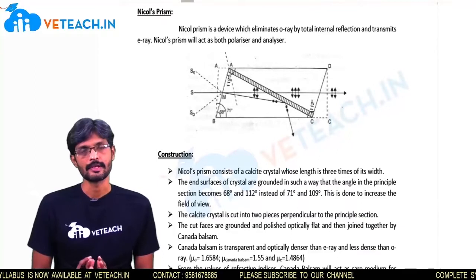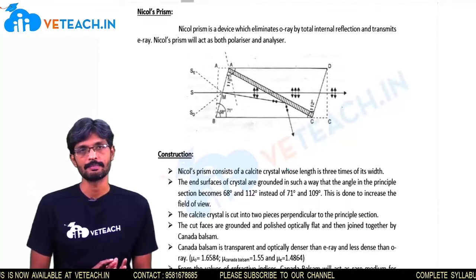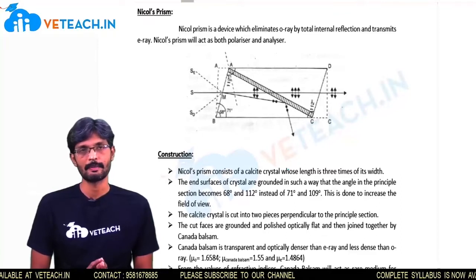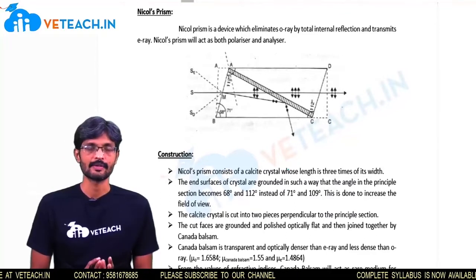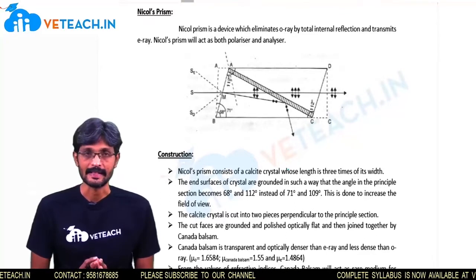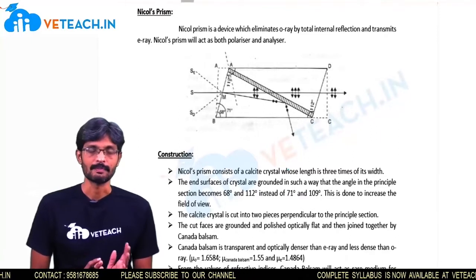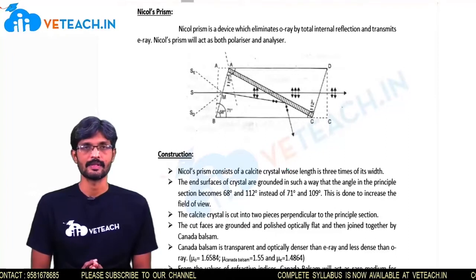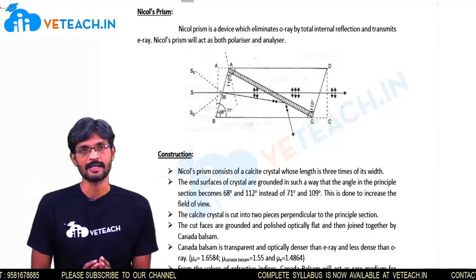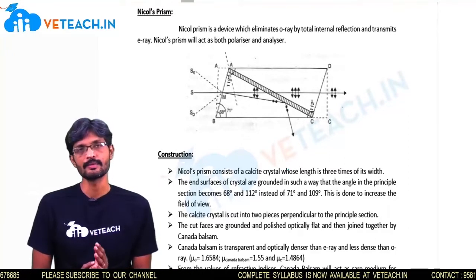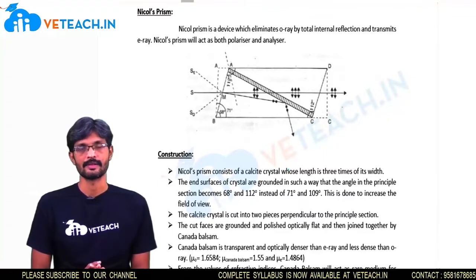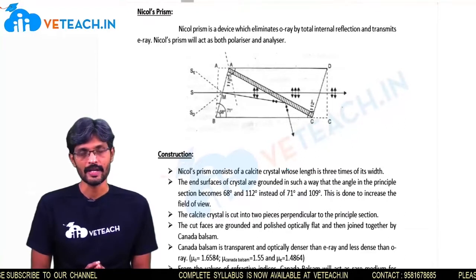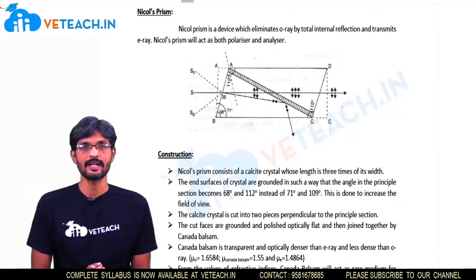Double refraction is a process of converting unpolarized light to polarized light. In the phenomenon of double refraction, we use anisotropic crystals like calcite. When unpolarized light is incident on this anisotropic crystal, the incident unpolarized light will split into two plane polarized lights. We name them as ordinary ray — O-ray — and extraordinary ray — E-ray. Both are plane polarized light.